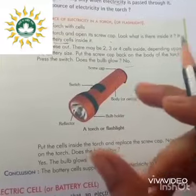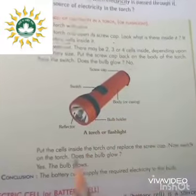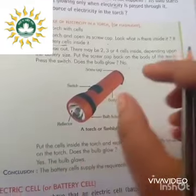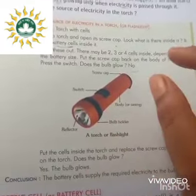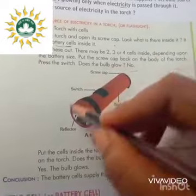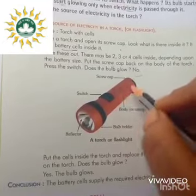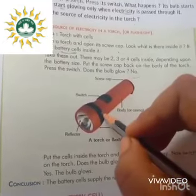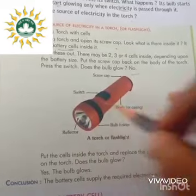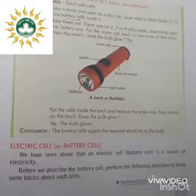The conclusion is: when you put the battery cell back inside the torch by opening the screw cap, fitting it, and pressing the switch, we see that the bulb glows. This means the battery cell is the important thing that supplies the required electricity to the bulb. Whenever the battery is inside, the current flows and the bulb glows. Whenever we take it out, it does not glow.